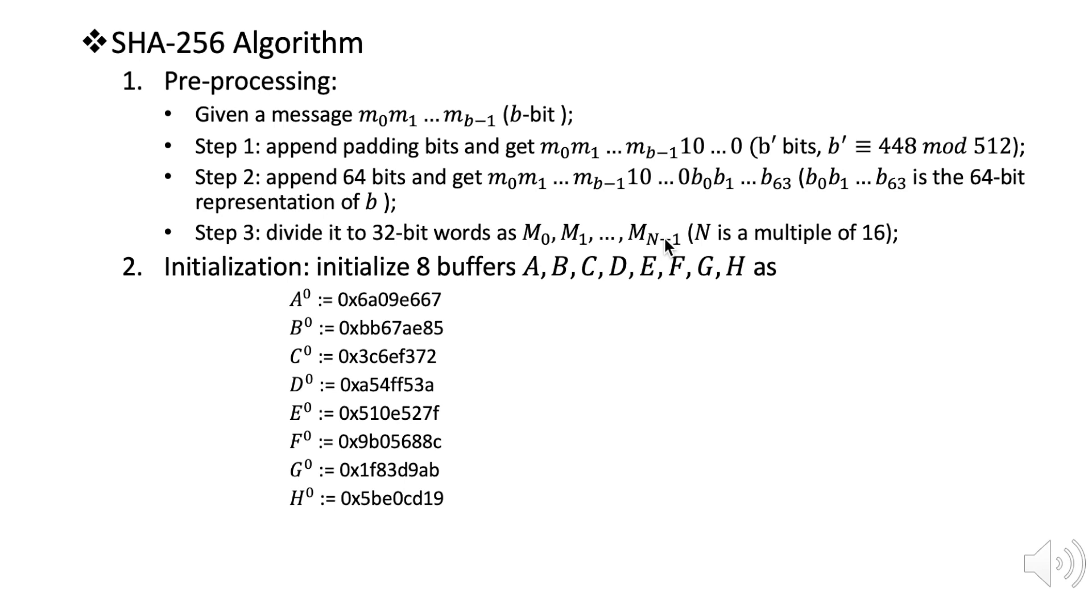To do that we're going to need eight buffers: A, B, C, D, E, F, G, H. These buffers are actually 32-bit registers, and first we're going to initialize them by these eight numbers here. These are hexadecimal numbers.